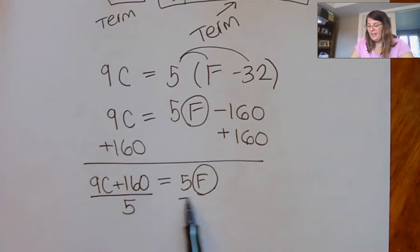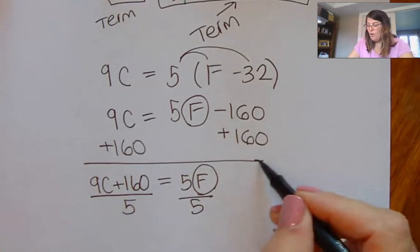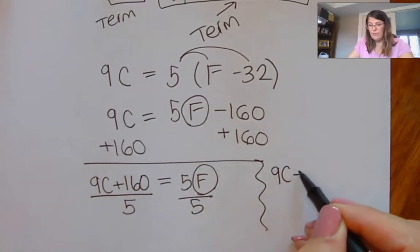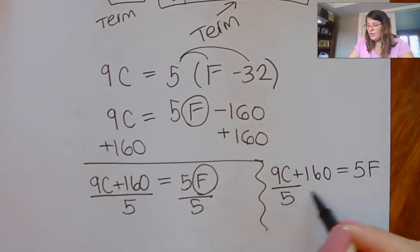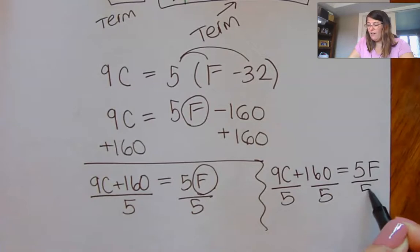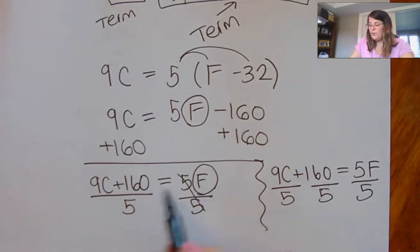Now five is multiplied by F. So I can divide both sides by F. Or guys, if you have it written like this, you can divide each term by five also.